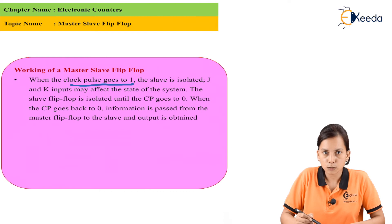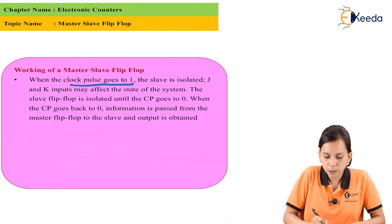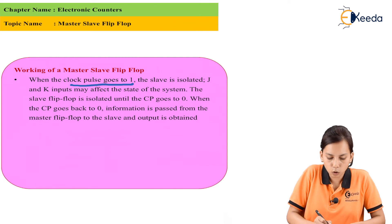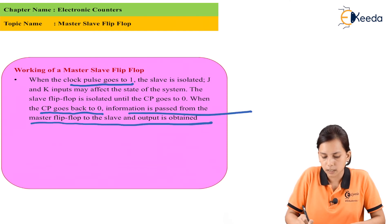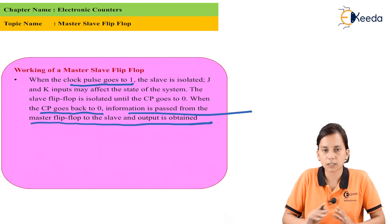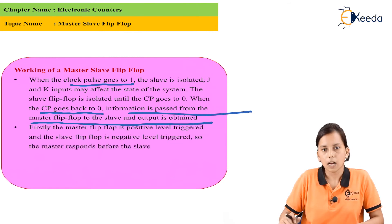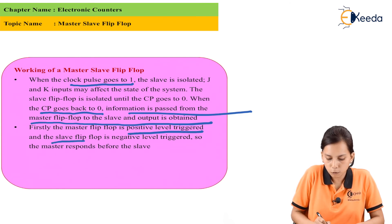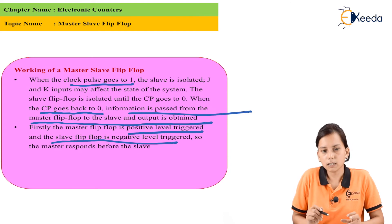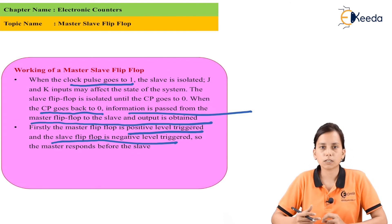When the clock pulse (CP) goes to zero, information is passed from the master flip-flop to the slave and the output is obtained. The master flip-flop is positive level triggered, and the slave flip-flop is negative level triggered, so the master responds before the slave.